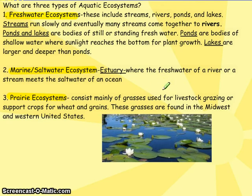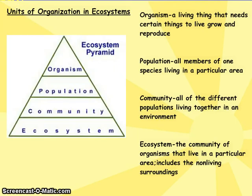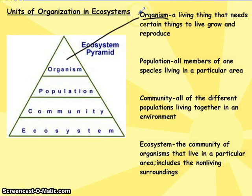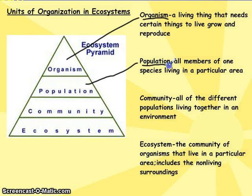Now let's look at other parts of an ecosystem. An ecosystem is made out of four different things — starting with the smallest part. An organism is a living thing that needs certain things to live, grow, and reproduce. When multiple organisms come together, we have a population — all members of one species living in a particular area, like a population of deer, rabbits, or people.